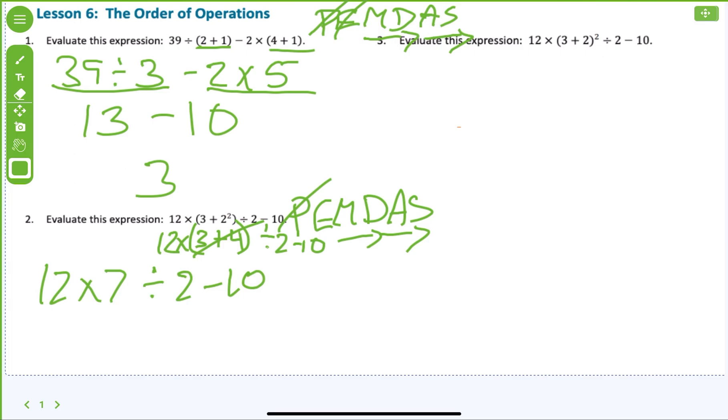Now I've got multiplication, division, and subtraction left. Well, what am I going to do first? Multiplication because it comes first. So what is 12 times 7? 84 divided by 2 minus 10. What is 84 divided by 2? 42 minus 10. Now I'm done with division, and all I have left is subtraction, and that equals 32.